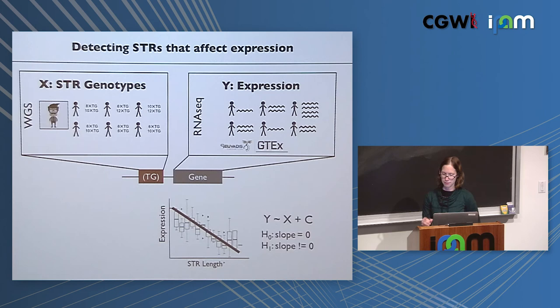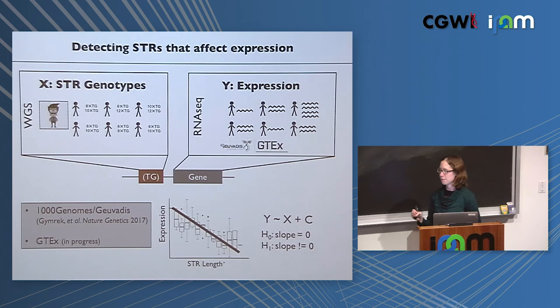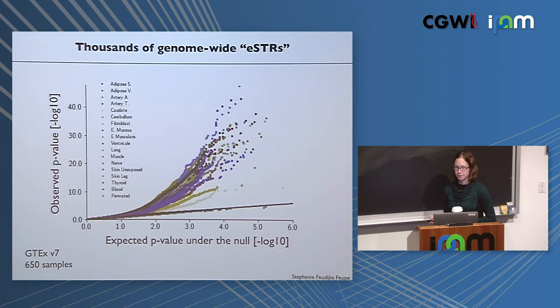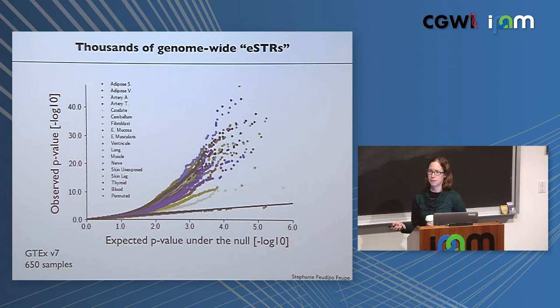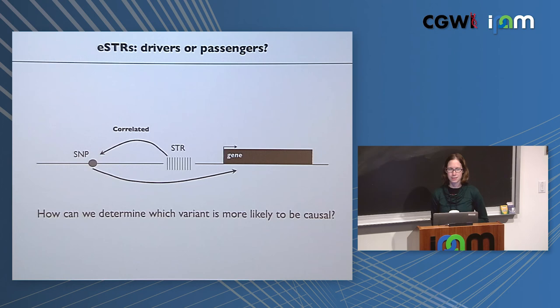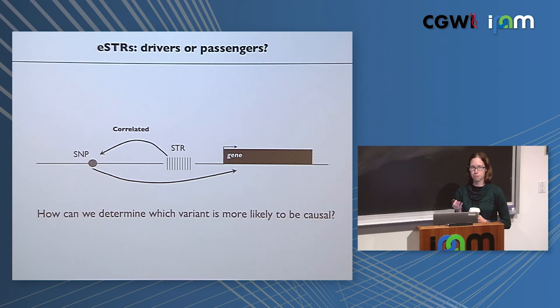We take all STRs close to a gene, get STR genotypes from HIPster, and combine with expression data for the same individuals to test associations between STR length and gene expression. Currently we assume an additive relationship — summing the two repeat alleles per genotype and testing that versus expression. We ask if the slope is different from zero. More complicated models clearly exist and are future work.